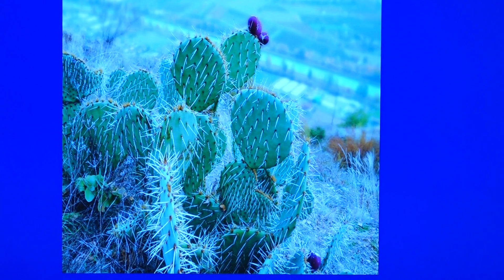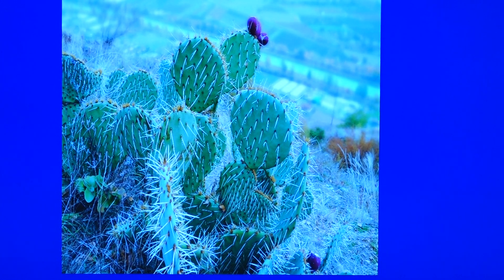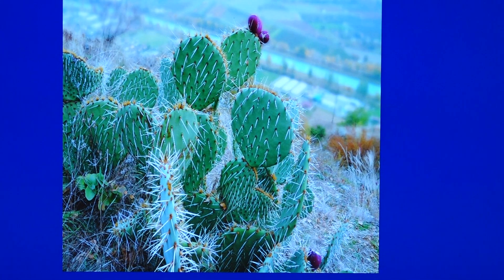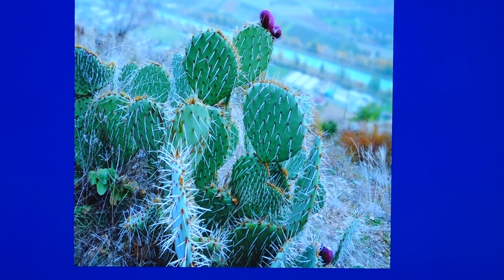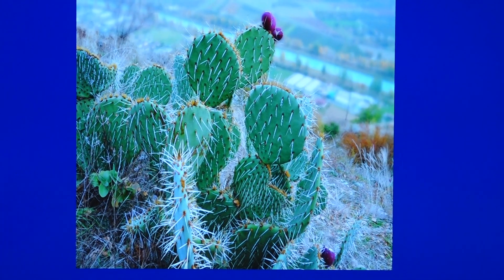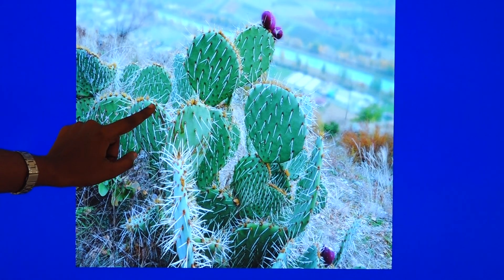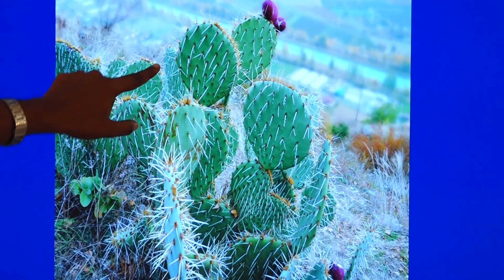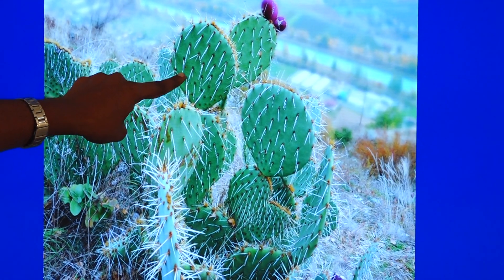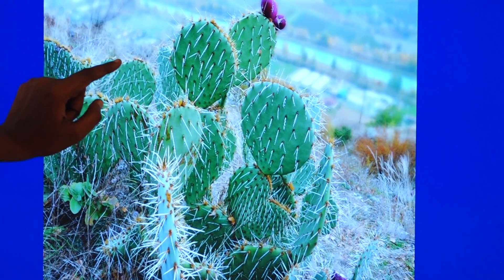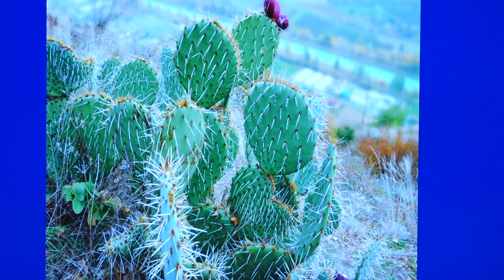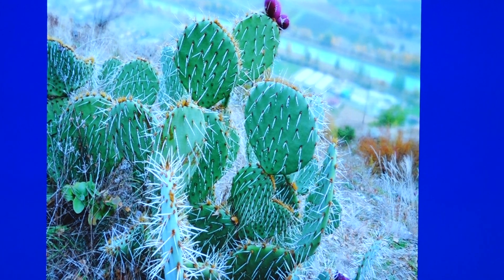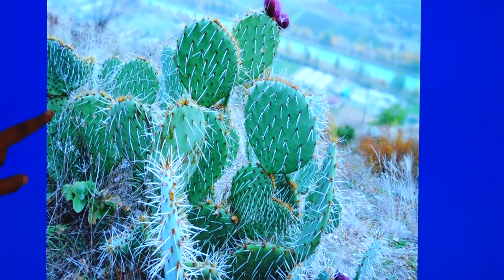The spines also help to check transpiration. The leaf is modified into a sharp-edged structure — that means it is modified into spines. You can see in this picture there will be a sharp-edged structure, that is spines. The function of these spines is to minimize the transpiration.